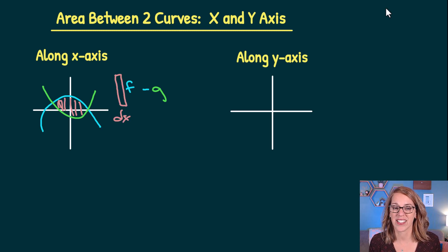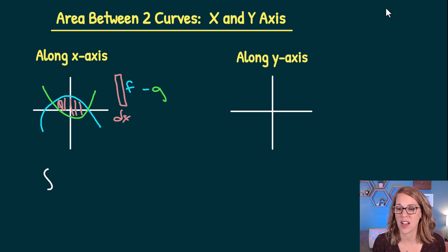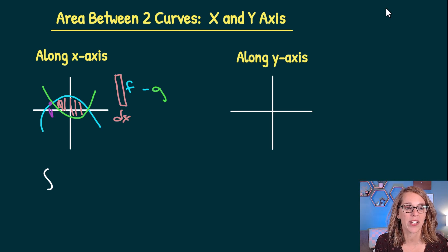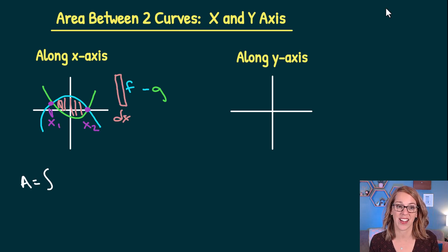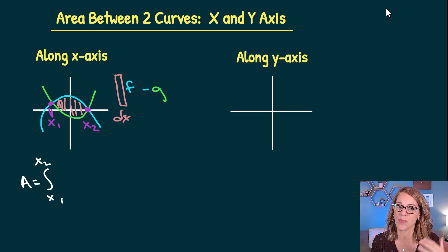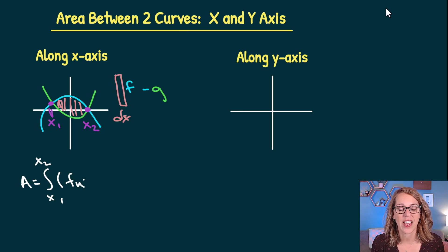So that's going to be a dx. I do need a couple of limits of integration. Those limits of integration are going to line up with my points of intersection — x sub 1 and x sub 2. So the area, integrating with respect to the x-axis, is the integral from x1 to x2, taking the upper function minus the lower function, dx.